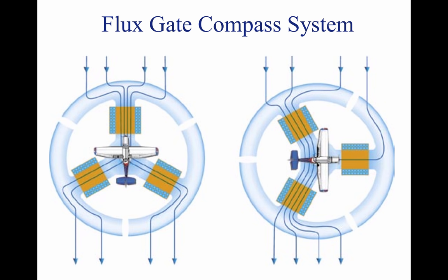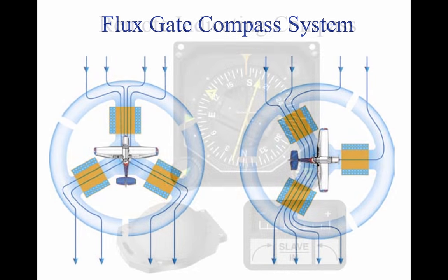The three coils are connected to three similar but smaller coils in a synchro inside the instrument case. The synchro rotates the dial of a radiomagnetic indicator (RMI) or an HSI.